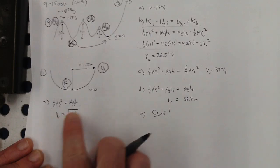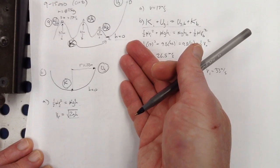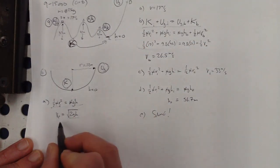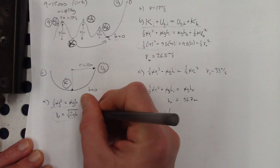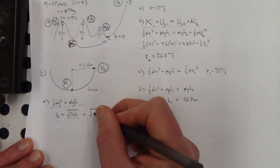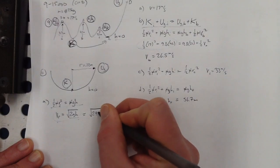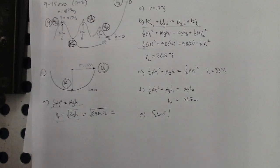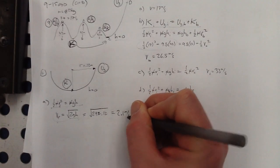This is an expression that comes up a lot. On a free response question you do need to set this up to get there. So: square root of 2 times 9.8 times 0.22 — that's about 2.1 meters per second.